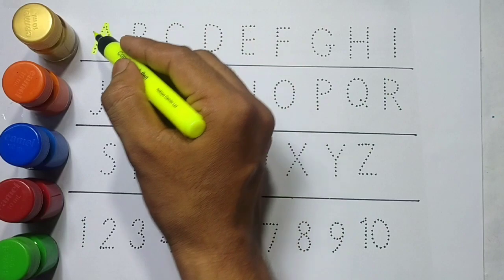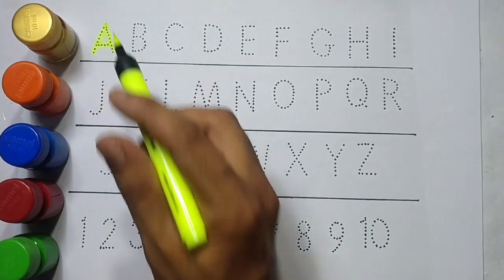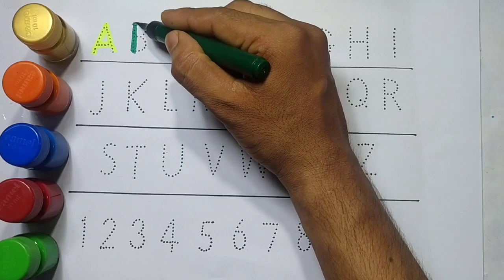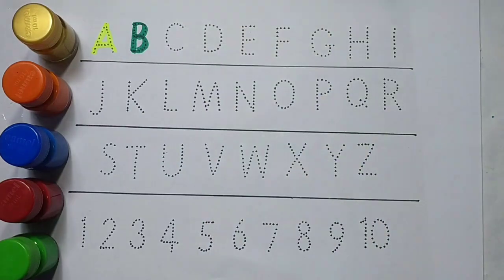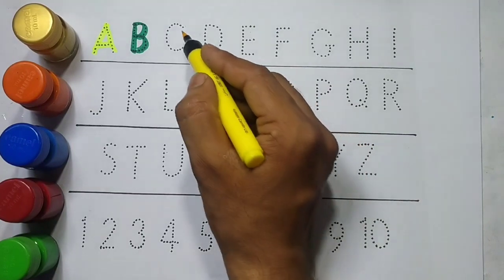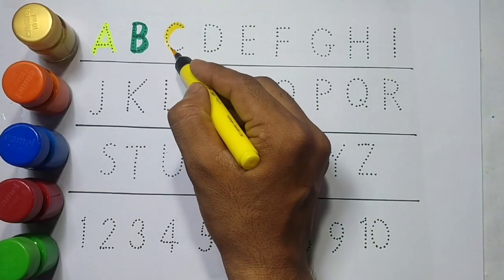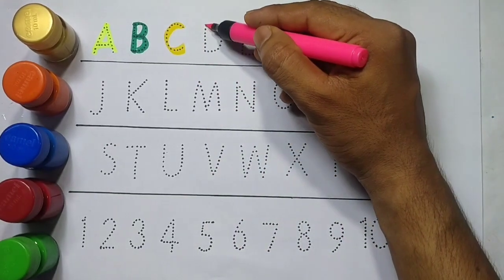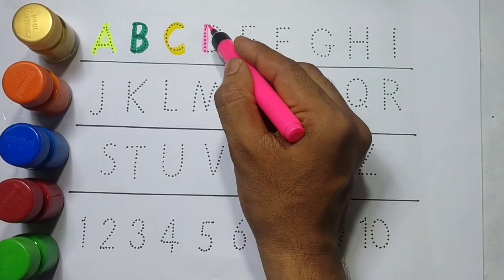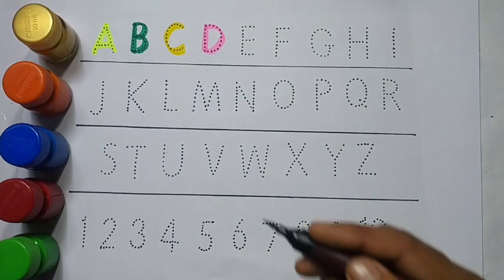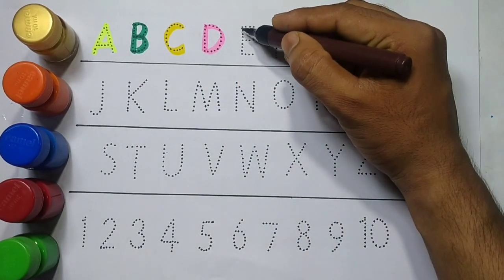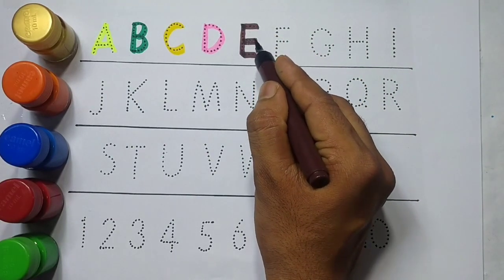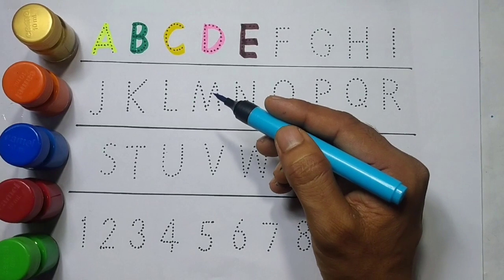A for ant, green color. B for banana, yellow color. C for cat, pink color. D for dog, brown color. E for elephant, sky blue color.